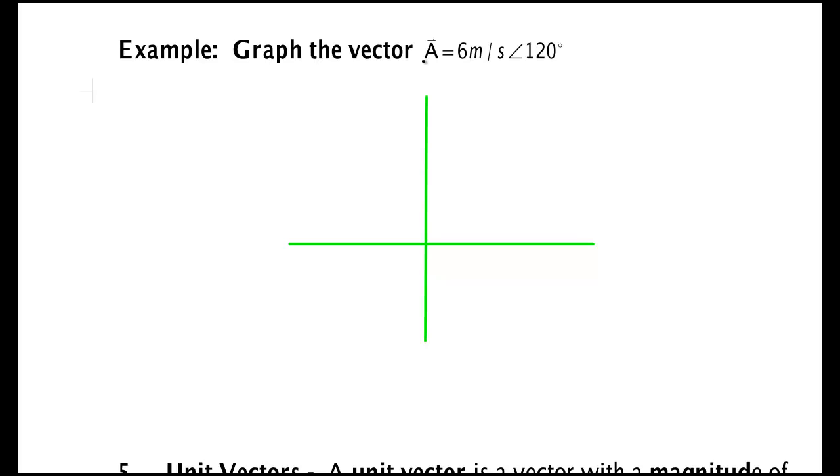In the last video we asked you to draw the vector A which is 6 meters per second at 120 degrees. So we know that it starts here and it goes out this way like this, and we would of course use a ruler to get that length.